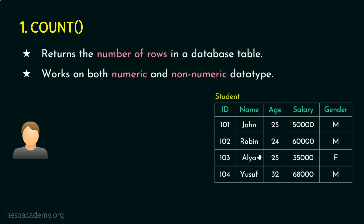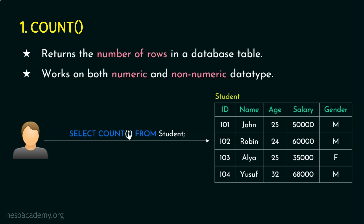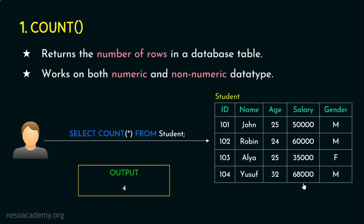Let's say this table is populated with some data. Assume a user is providing a query: SELECT COUNT(*) FROM student. We need parentheses because this is a function, and the asterisk means all rows. What will this query return? It will return the number of rows as the output. How many rows are there? 1, 2, 3, and 4. So, this query will return the output as 4. This COUNT aggregate function takes a group of values and returns a single value, which is 4.